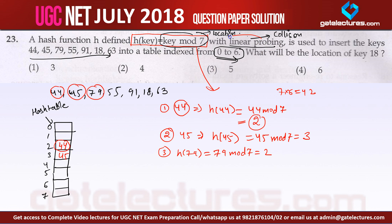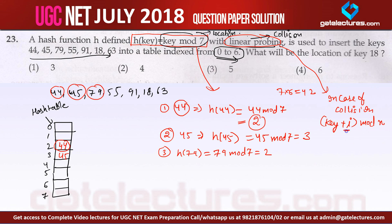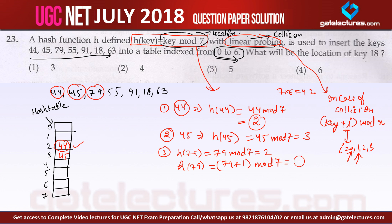Because we are using linear probing, in case of collision we increment using the formula (key + i) mod n, where i ranges from 0, 1, 2, 3... For key 79, a collision occurs at index 2, so we try (79 + 1) mod 7 = 3, but location 3 also has an element. Next, (79 + 2) mod 7 = 4, so 79 is stored at index location 4.